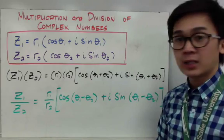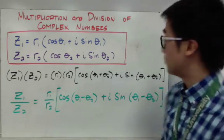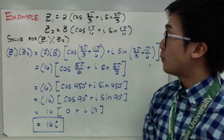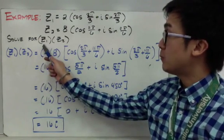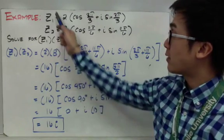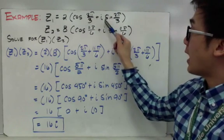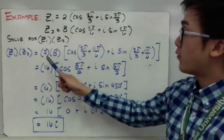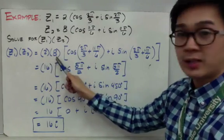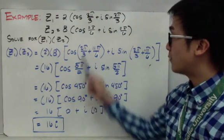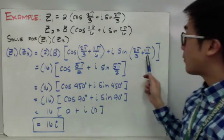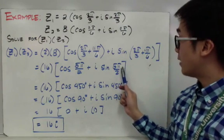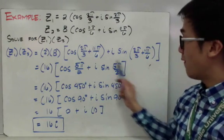The formula might seem a little complicated, but once you use it, it's a lot easier. For our first example, we multiply z₁ = 2(cos(2π/3) + i·sin(2π/3)) and z₂ = 8(cos(11π/6) + i·sin(11π/6)). By the formula, multiply the r's: 2 × 8 = 16, and add the angles: 2π/3 + 11π/6, giving 5π/2.